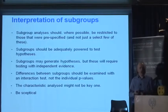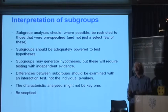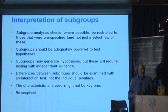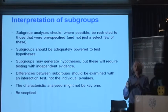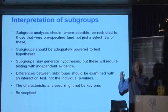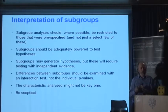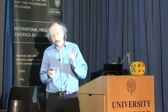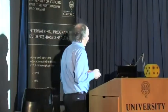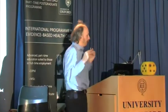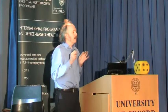The differences between subgroups should be examined with an interaction test — a little bit of mathematics there. We should not use the individual p-value. We shouldn't say, well, in this subgroup it's non-significant. What we should be asking is: is there any reason to believe that this subgroup is different to that one for anything other than chance? We also — and this is even more important — recognise that when we do subgroup analyses, we might have divided the data on the basis of the wrong thing.